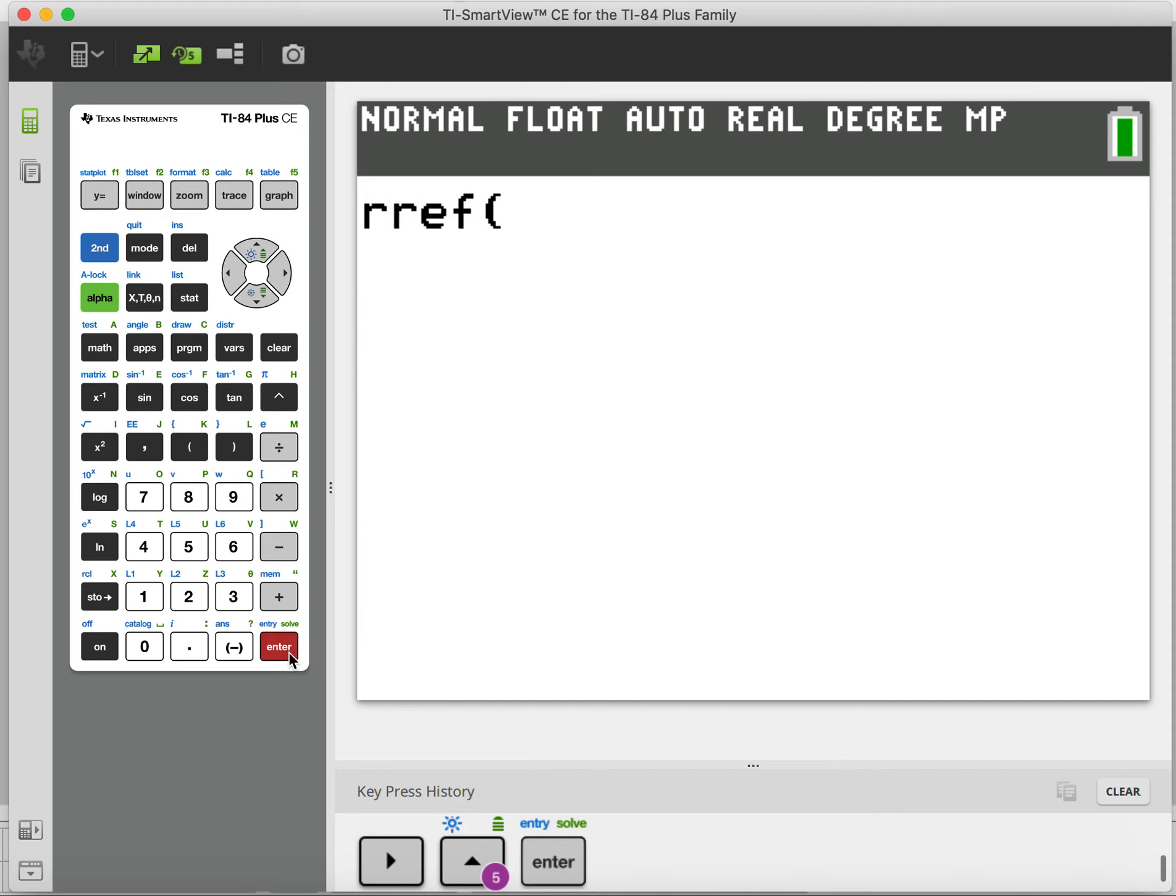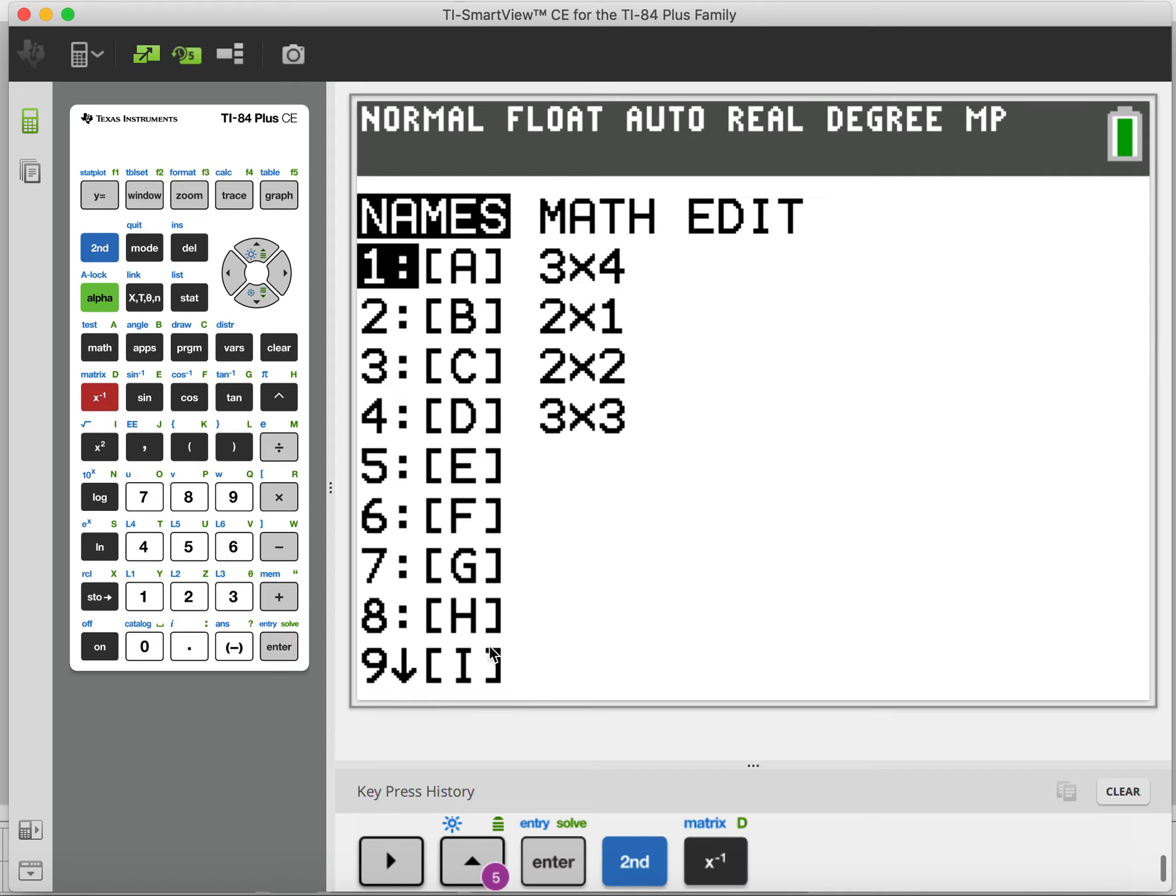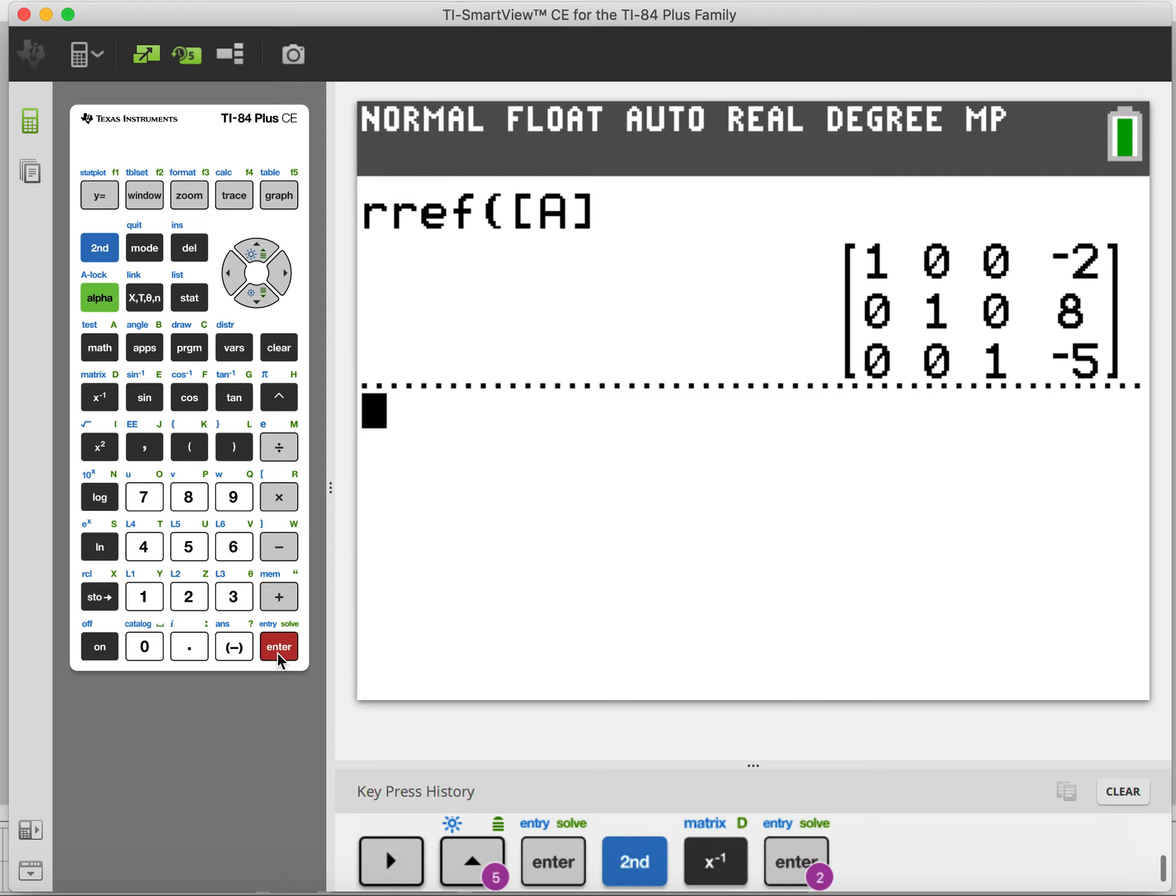Then from here, we go back to our matrix, which is above x inverse. So we go second matrix. And you just stay in the names column and grab matrix A and hit enter.